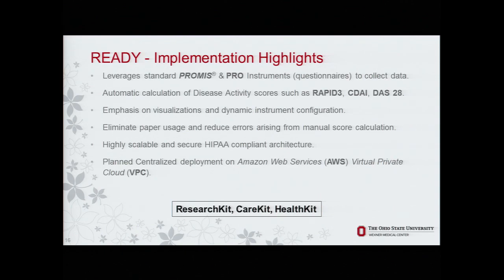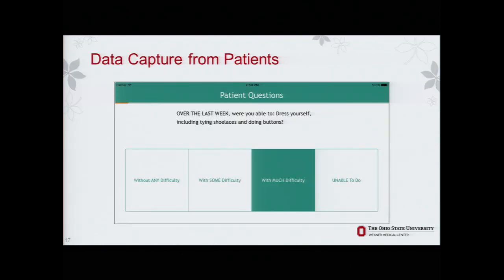Everything is highly scalable and secure from a HIPAA standpoint. We have had increased emphasis on visualizations and the way instruments are configured. ResearchKit, CareKit, and HealthKit were used in building this. This is an example of a patient-facing screen for capturing data — the patient-reported outcome for rheumatoid arthritis. The buttons are really large to make it easier for patients to click, since many of them do have trouble using their fingers. This was deliberately designed with large buttons — it is actually less painful for them than doing it on paper.